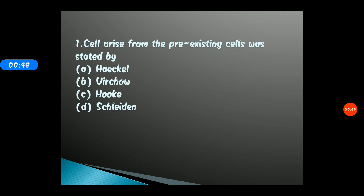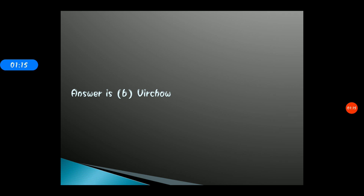Question 1: 'Cell arise from the pre-existing cells' was stated by — options: A) Haeckel, B) Virchow, C) Hooke, D) Schleiden. The correct answer is option B, Virchow. Rudolf Virchow proposed the phrase in Latin: 'Omnis cellula e cellula,' which means all cells arise from pre-existing cells.